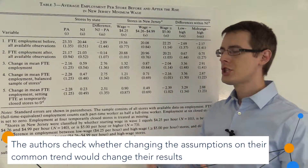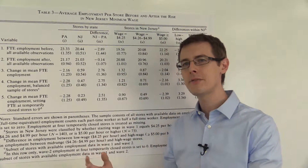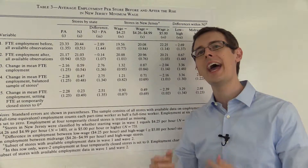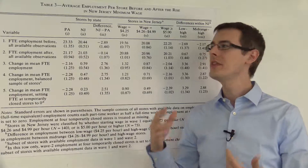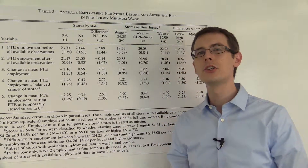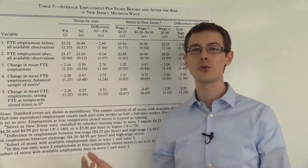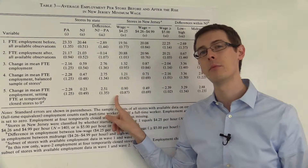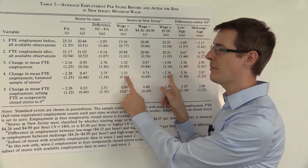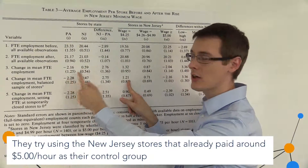So in order to check that assumption in some sense, we're going to use a slightly different control group. Here the idea is we use the high wage stores in New Jersey as our control group. These high wage stores were already paying wages pretty much above what the new minimum wage was. So you might think maybe they're just not affected by treatment at all. So they might be a good control group for the stores who were paying the minimum wage and therefore are forced to increase their wage. Let's use them as the comparison group for the low wage stores instead of Pennsylvania.